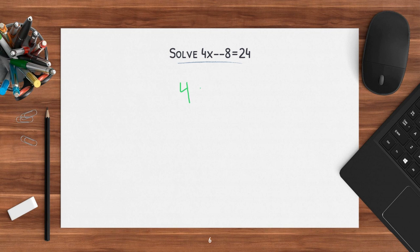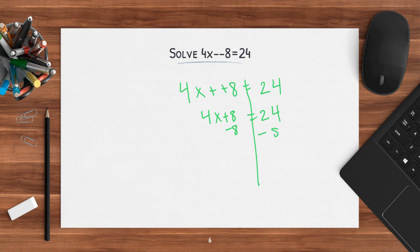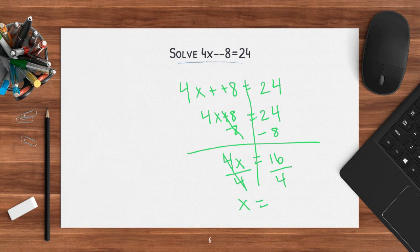Now I have 4x minus negative 8 equals 24. This one's a little tricky because I have minus negative. Whenever I have minus a negative, remember that turns to plus positive. So I can rewrite this as 4x plus 8 equals 24. I start by subtracting 8, because I get rid of the furthest thing from x first. Positive 8 minus 8 cancels out, leaving 4x. What is 24 minus 8? That's 16. Now I divide both sides by 4. 4 divided by 4 is 1, so x equals — what is 16 divided by 4? Well, that's 4.